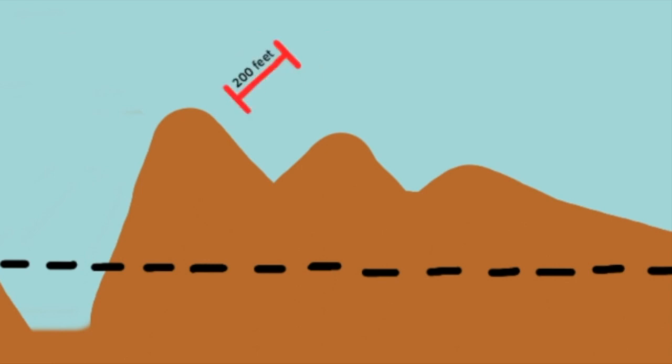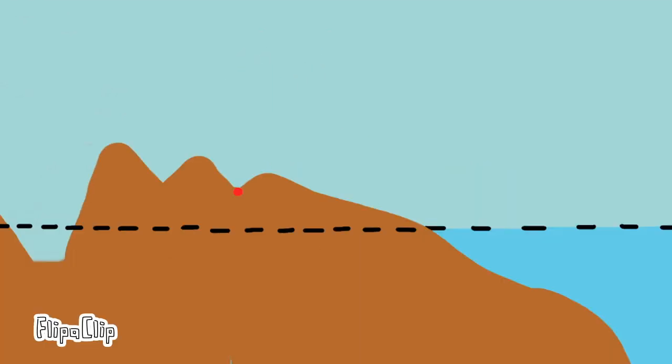This distance represents approximately 200 feet. The elevation of this point on the hill is approximately 200 feet above sea level. The elevation of this point on the valley floor is approximately 200 feet below sea level.